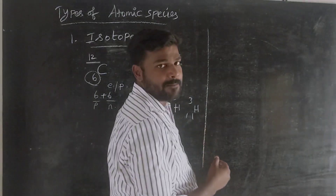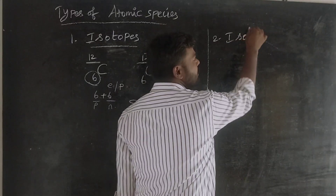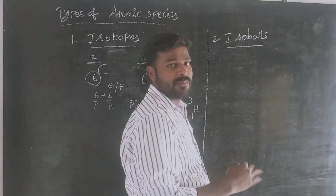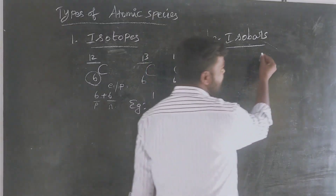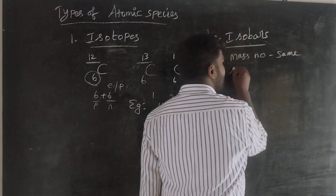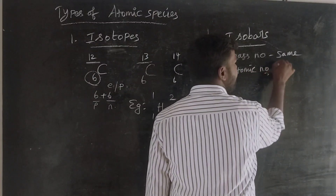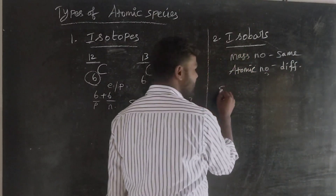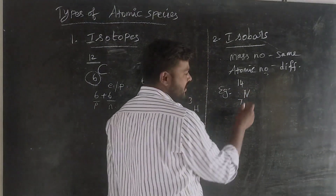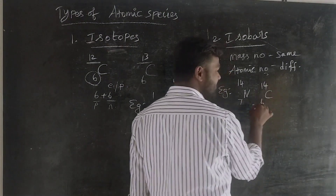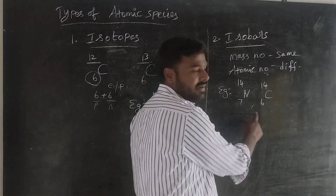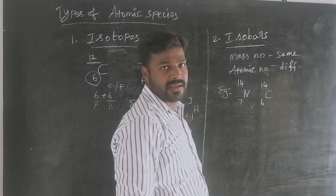The second type is isobars. Isobars have the same mass number but different atomic numbers. So they are different elements with the same mass number. For example, nitrogen with atomic number 7 and mass number 14, and carbon-14 — these have the same mass number but different atomic numbers, making them isobars.